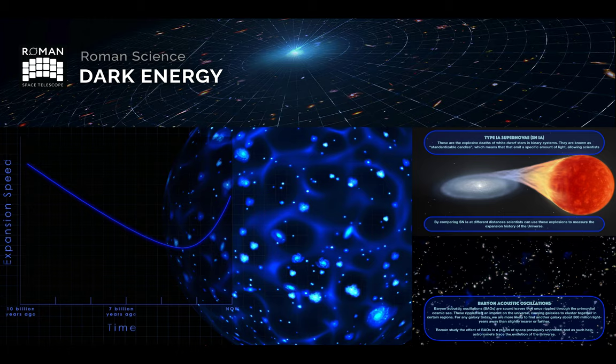An additional probe are baryonic acoustic oscillations. In the primordial universe there were what we can think of as sound waves which rippled throughout the fabric of space and these caused fluctuations in the density of the visible normal matter. So over time galaxies tended to form around these peaks of the ripples and patterns began to form. The overall effect of this means that for any galaxy today we are more likely to find another galaxy about 500 million light-years away than slightly nearer or farther.